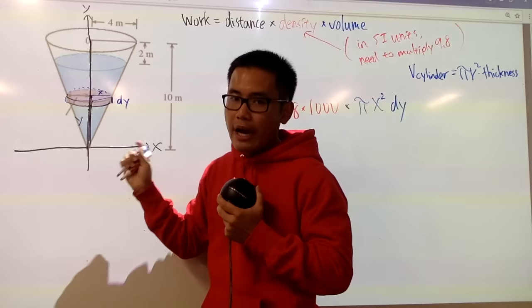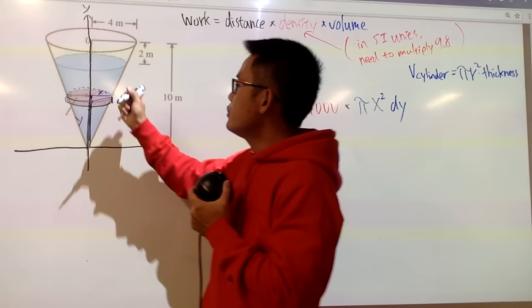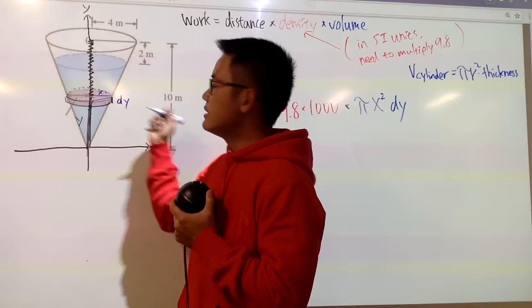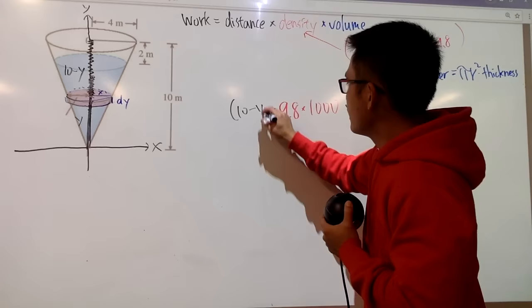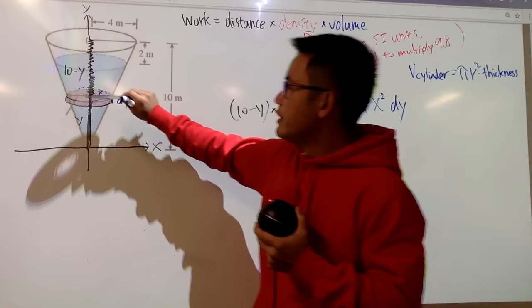But I care about the distance from here to here so that the water can be out. Well, the whole thing is 10. This much is y already, which implies that from here to here, the distance is just 10 minus y. So let me write this down: 10 minus y, and we multiply by 10 minus y right here. This represents the work that we need to pump out this much of the water from here to the top of the tank.